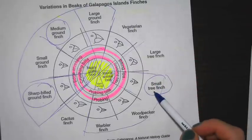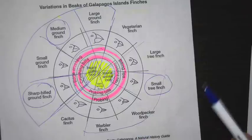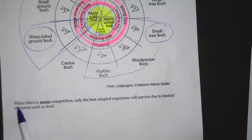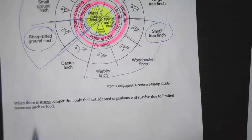The small tree finch is unaffected because it's not competing for food. In the lab, there were three rounds: round one had no competition, round two you competed with one other group, and round three had four or five groups all eating from the same tin. The main idea is that more competition means only the best adapted survive due to limited resources — whether food, water, or space. More competition means fewer organisms can survive.